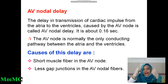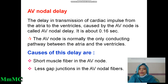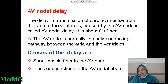This is a written question on AV nodal delay. The delay in transmission of cardiac impulse from the atria to the ventricles, caused by the AV node, is called AV nodal delay. It is about 0.16 seconds. This topic may come as a short note in your written exam.